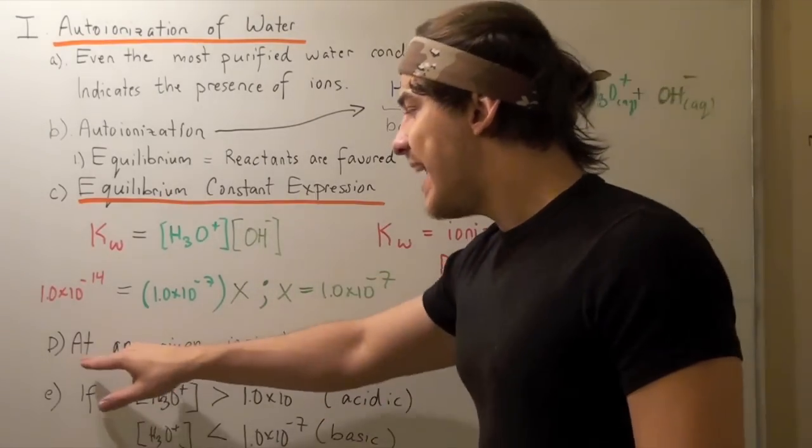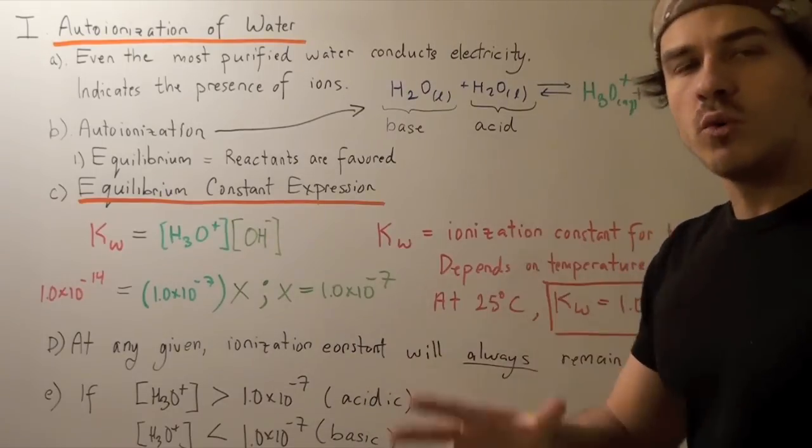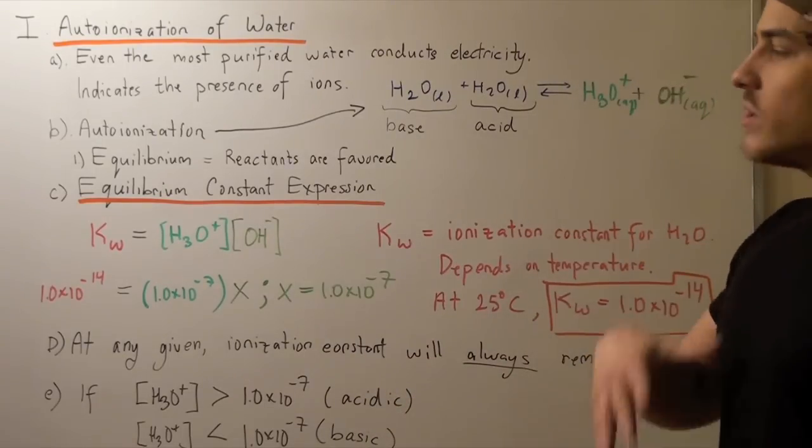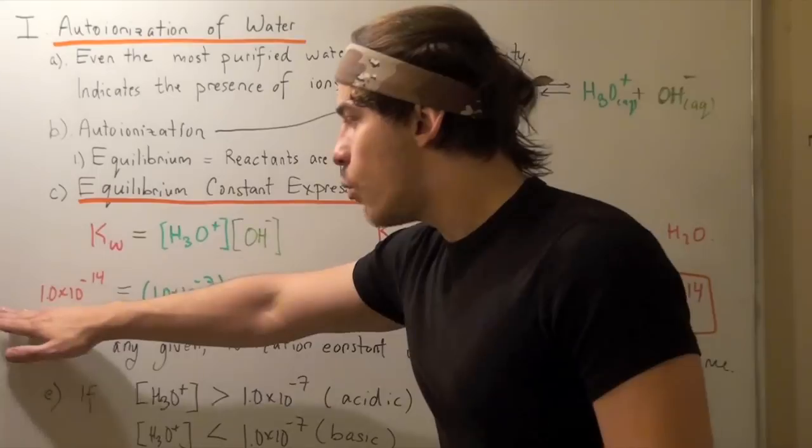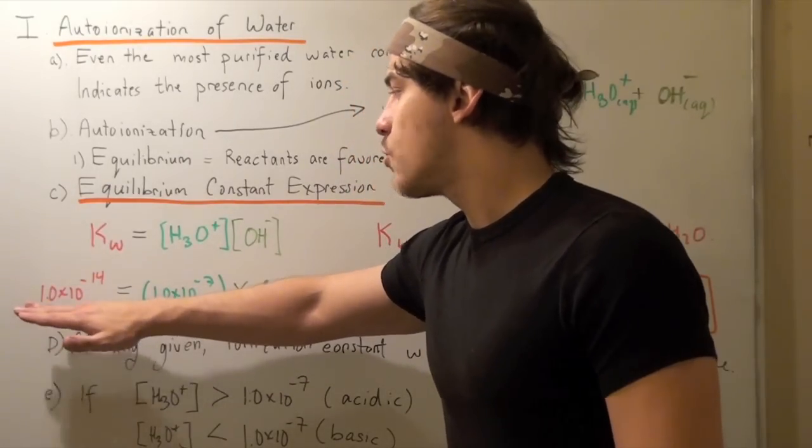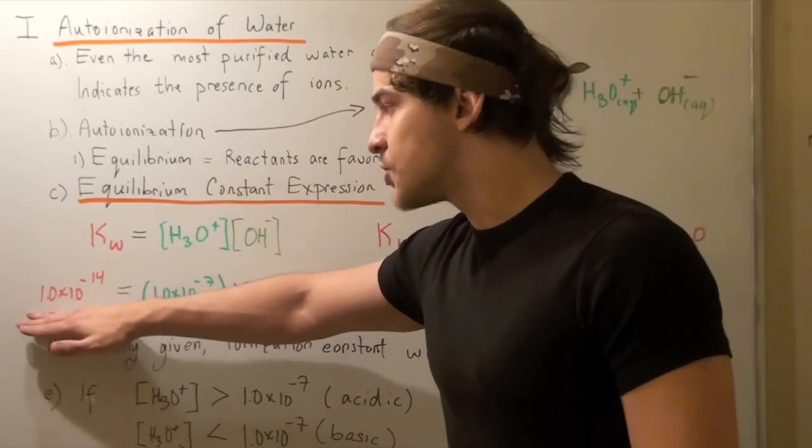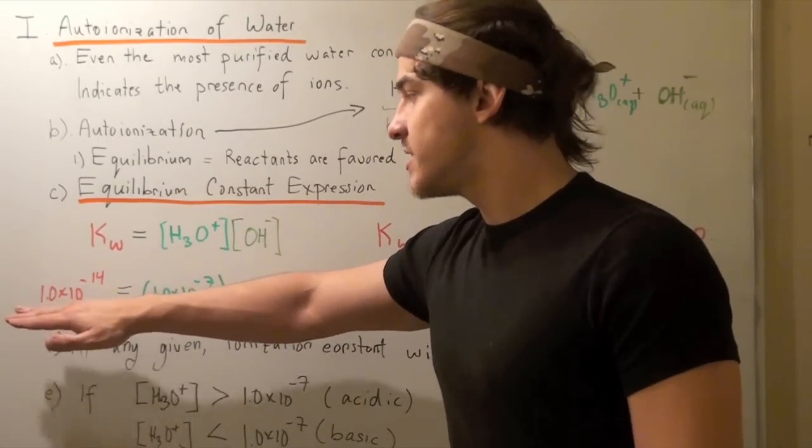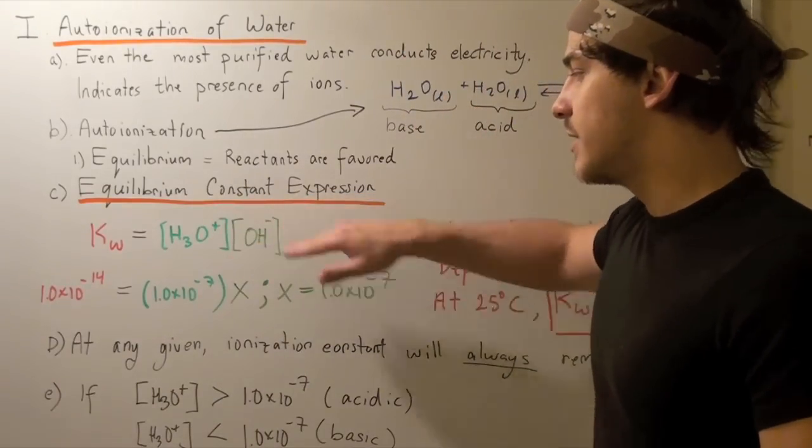At any given temperature, the ionization constant will always remain the same. So at 25 degrees Celsius, this will always be 1.0 times 10 to negative 14. This will only increase with increase in temperature or decrease with decrease in temperature. This does not depend on the concentration of hydronium nor hydroxide.